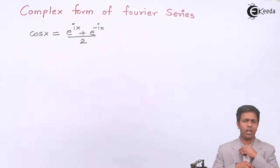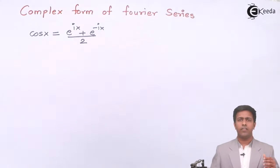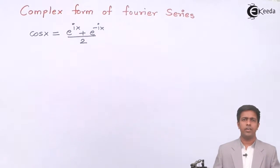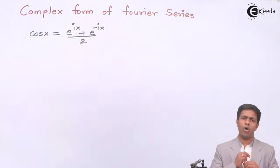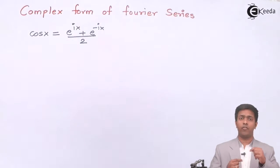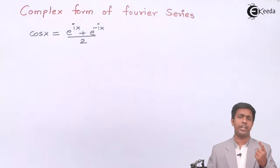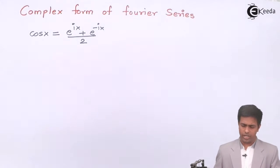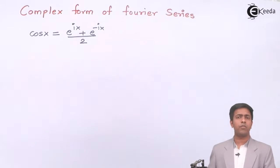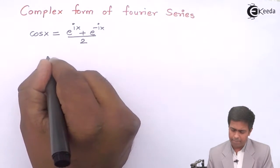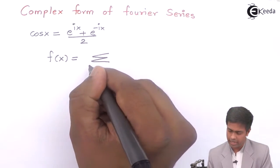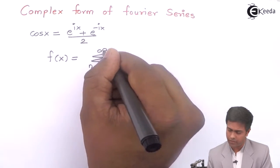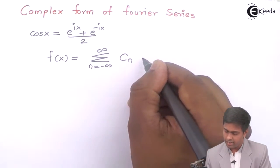Here I'm not going to cover the derivation for the complex form of Fourier series; we'll be covering the formulae required for solving the numericals. First, let's see the generalized formula for the complex form of Fourier series, which is applicable in almost all numericals, and in which we change the range of integration depending on the question. The formula is: f(x) = summation from n = −∞ to +∞ of cₙ e^(inπx/l).